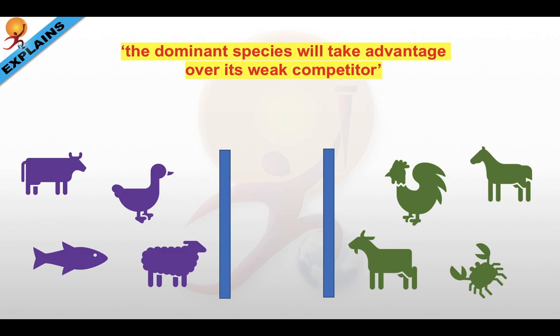For example, competition can occur between a fish and a crab, sheep and a goat, duck and a hen, cow and a horse, etc.